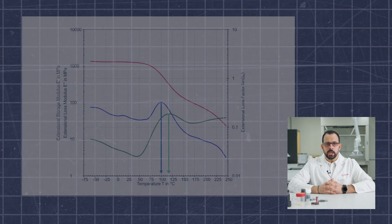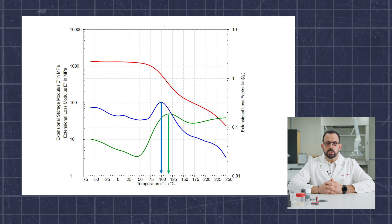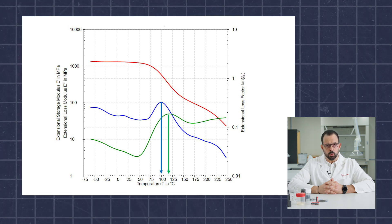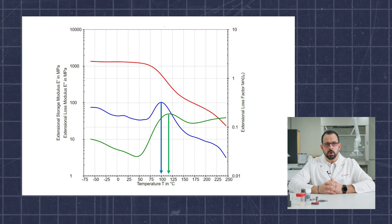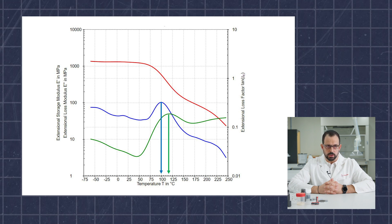When looking at the results of the temperature ramp, you can determine the glass transition temperature, as well as the storage modulus over the temperature range, which can be related to the Young's modulus.